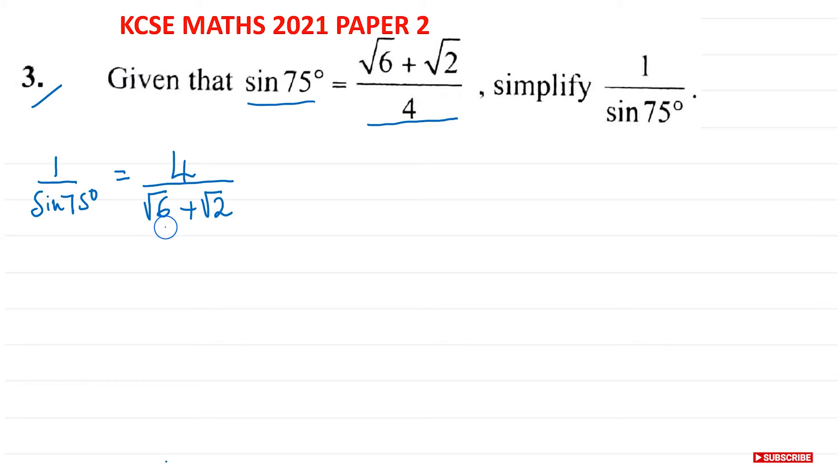Now we can see we have a surd as the denominator and we don't want that, which means we need to rationalize the denominator. That means we need to remove the square root. And how are we going to do that?